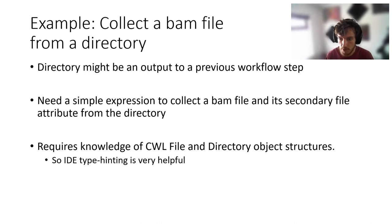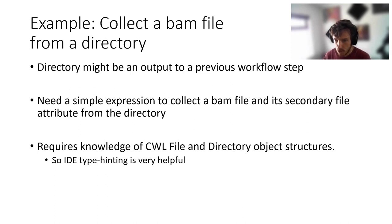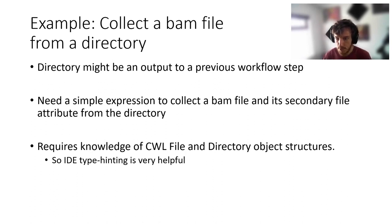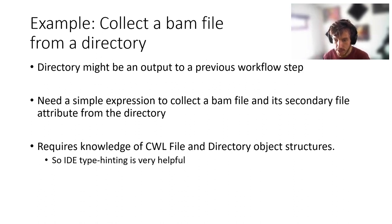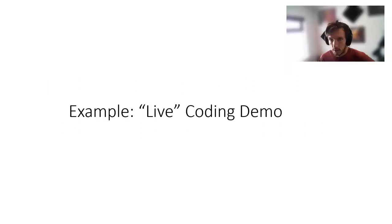Let's imagine we have a workflow with two steps: the first creating a directory that contains a BAM file. That BAM file isn't usually a relevant output for this tool and so isn't in the list of outputs, but we need it as an input for the second tool in this particular workflow. So we need a simple expression to collect a BAM file from the output directory object's listing attribute. Now I'm going to enter into a live coding demo.